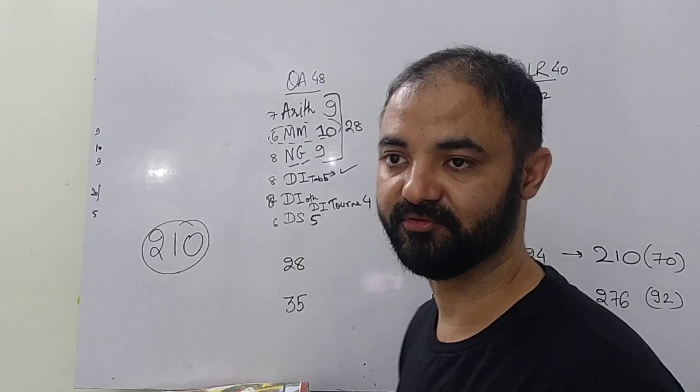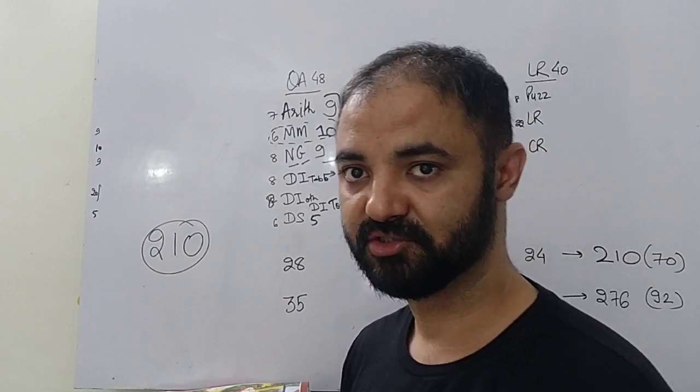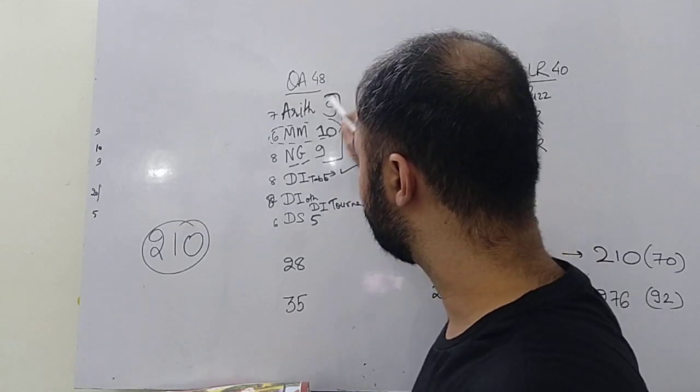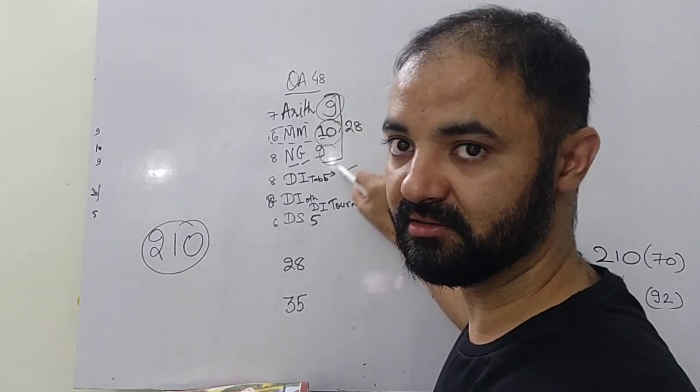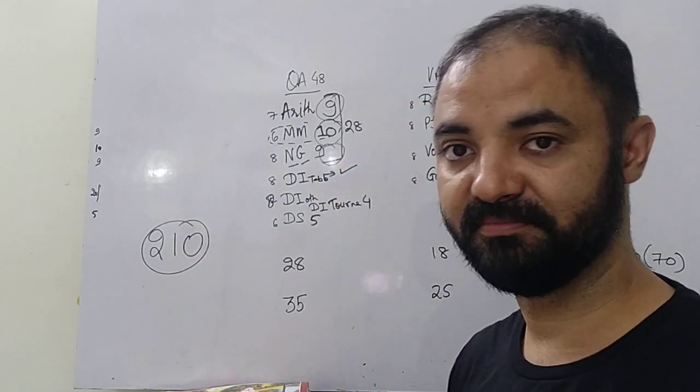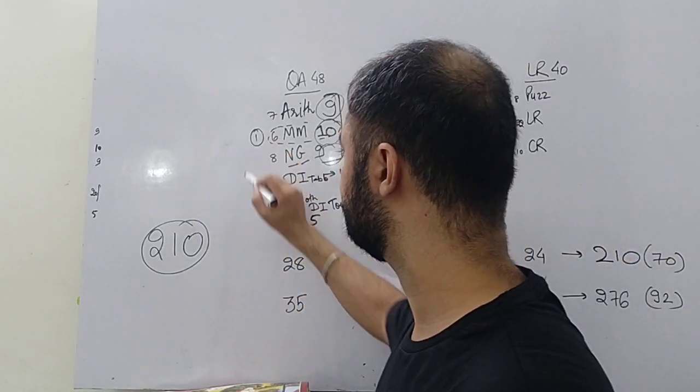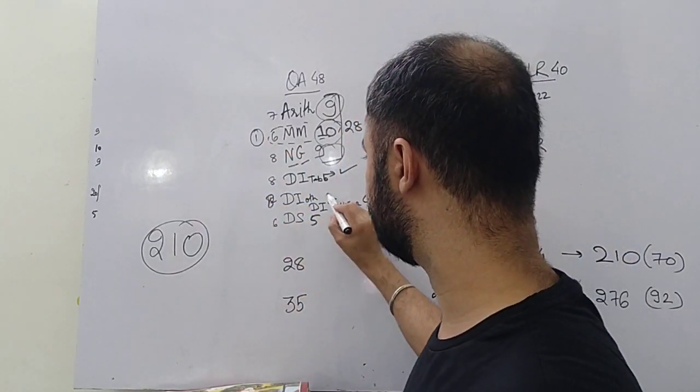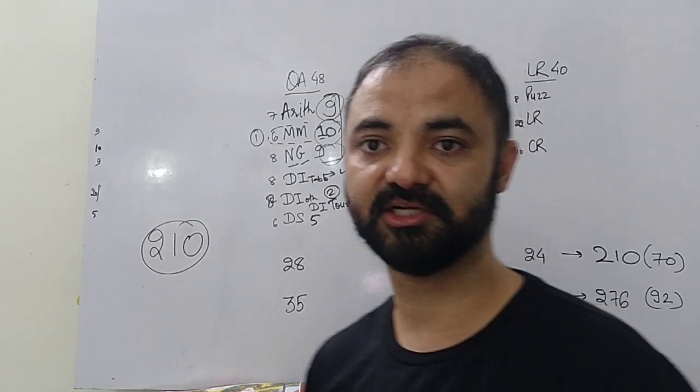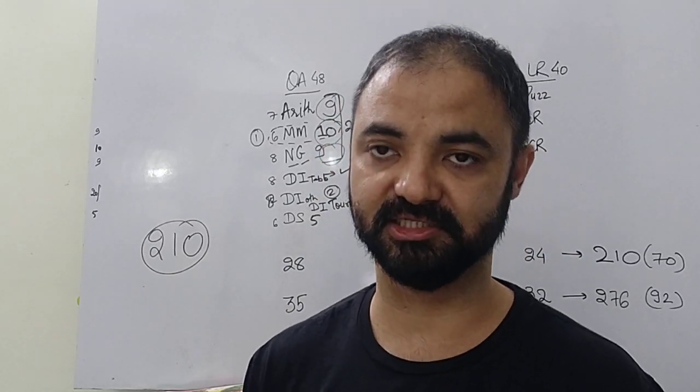Data sufficiency 5 questions, which was based on quant. So the value of these 3 have gone up now. Modern maths is the first major change and number 2 major change is tournament-based DI. These are the 2 major changes which happened in the quant section.